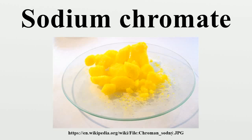Sodium chromate is the inorganic compound with the formula Na₂CrO₄. It exists as a yellow hygroscopic solid, which can form tetra-, hexa-, and decahydrates. It is an intermediate in the extraction of chromium from its ore.